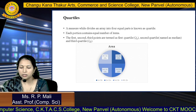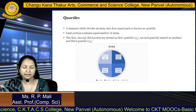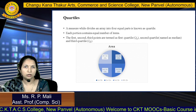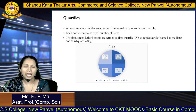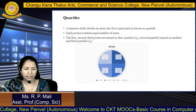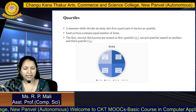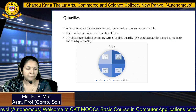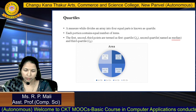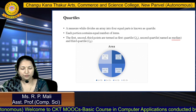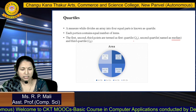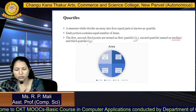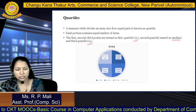The first, second, and third points are determined as your first quartile, second quartile, and third quartile. Your second quartile is also known as your median. Your first quartile is denoted by Q1 and your third quartile is denoted by Q3.